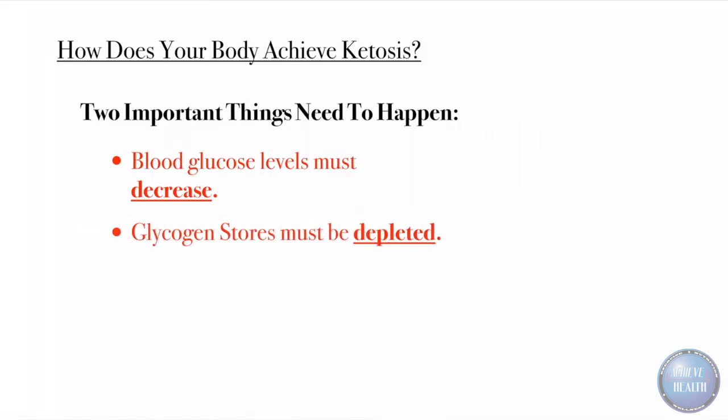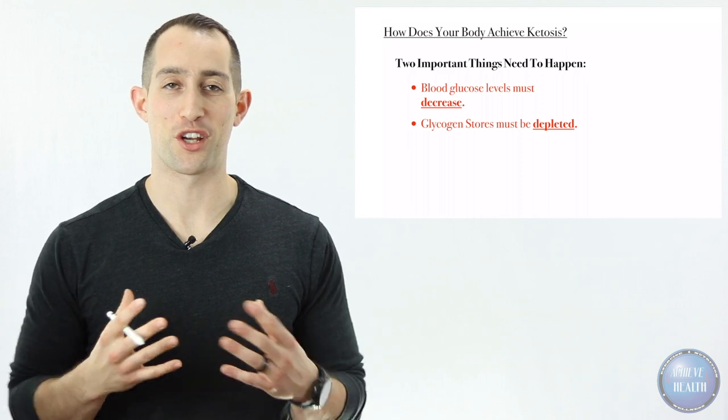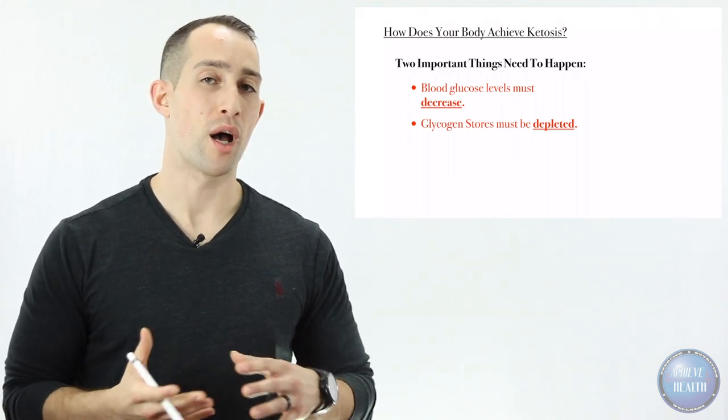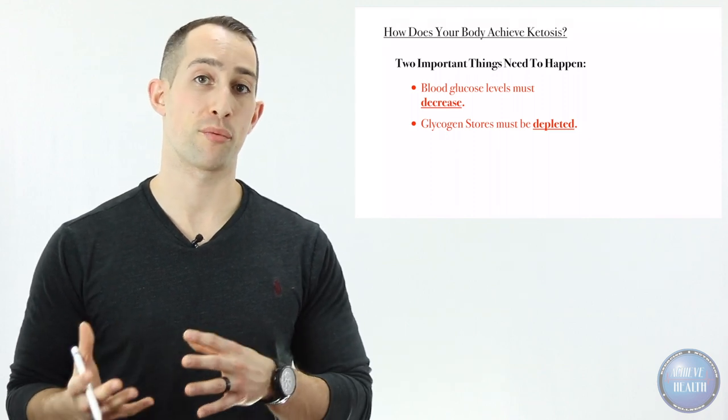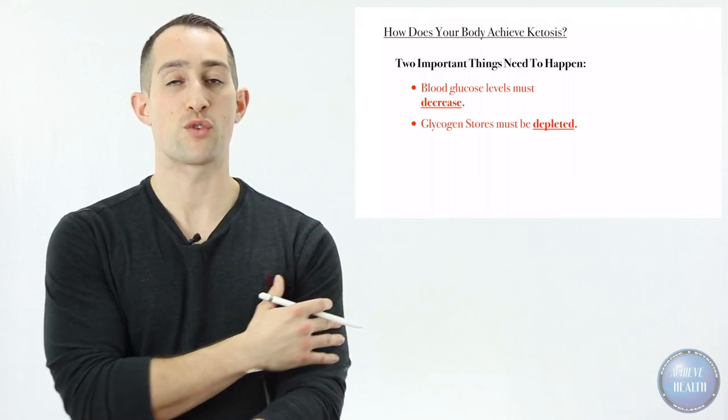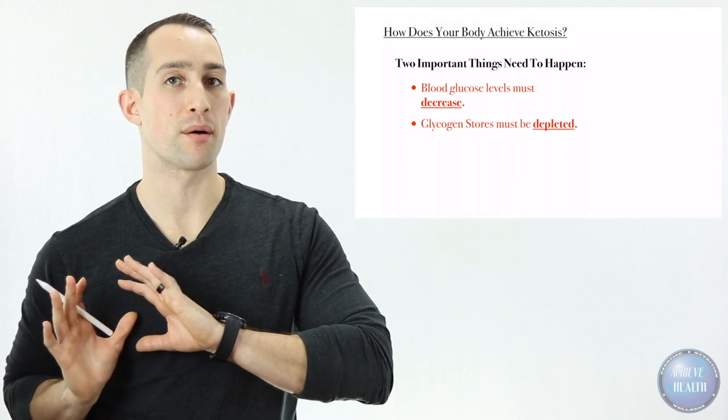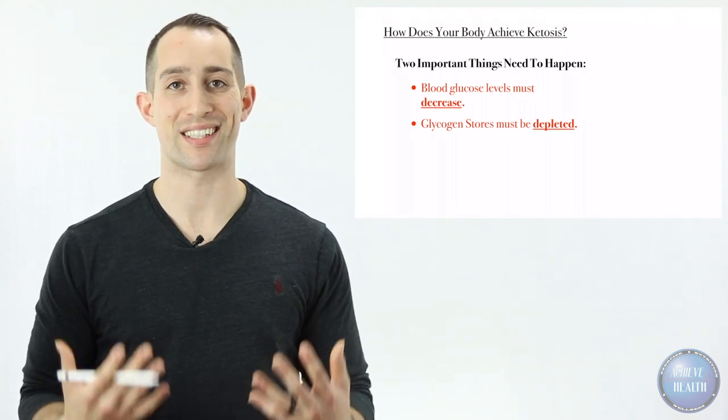The second thing that needs to happen is glycogen stores must be depleted. Glycogen is just another way of saying stored carbohydrate or stored sugar. We store about 2,500 to 3,000 calories of sugar in our bodies at any given time in the muscles as well as the liver and other organs. Those stores must be completely emptied out in order for us to be put in a ketogenic state.